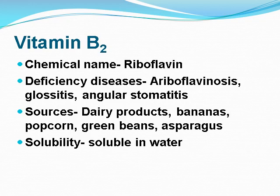Vitamin B2: its chemical name is riboflavin. Deficiency diseases include ariboflavinosis, glossitis, and angular stomatitis. Sources include dairy products, bananas, popcorn, green beans, and asparagus. Solubility: it is soluble in water.